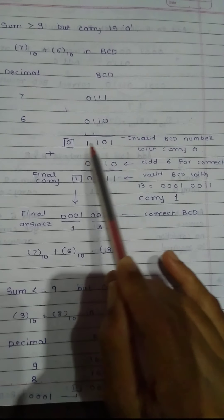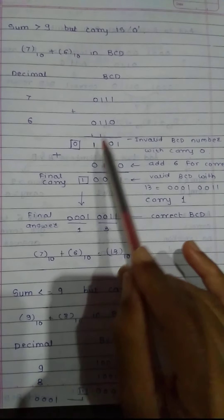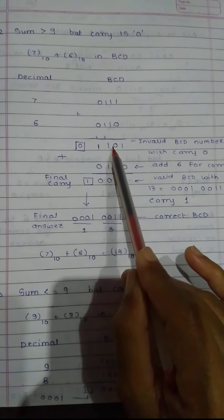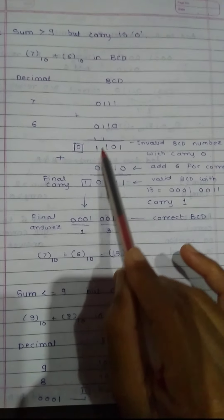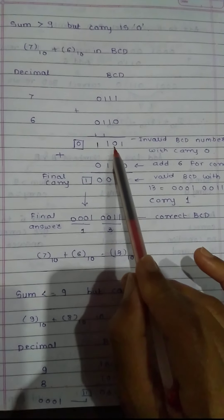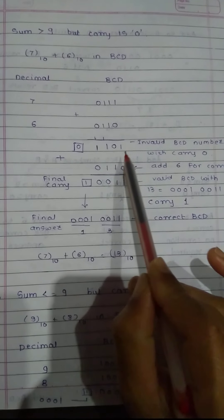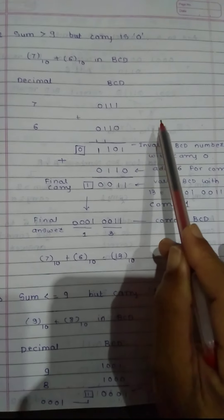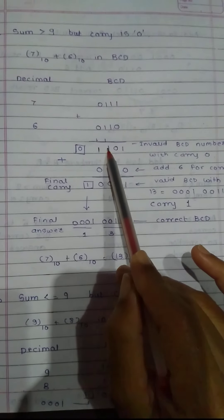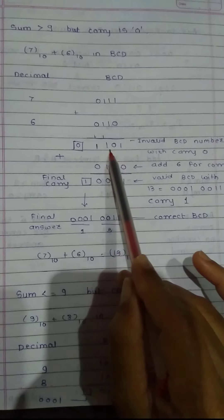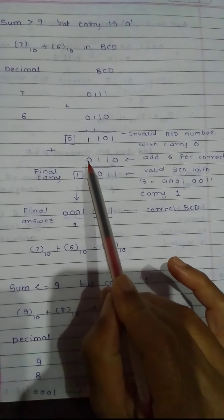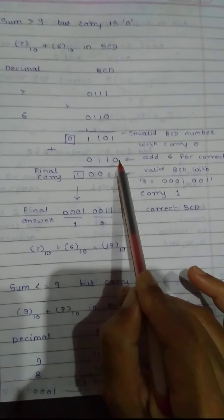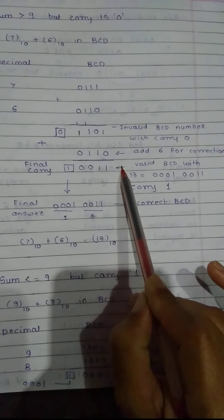The result 1101 — checking with the 8-4-2-1 code gives 8 plus 4 plus 1 equals 13. But this 13 is represented as invalid BCD, because valid BCD represents 13 separately as 0001 and 0011. Since carry is 0 and the result is invalid BCD, we add 0110 (6) for BCD correction to get a valid BCD result.